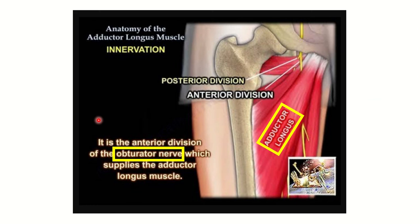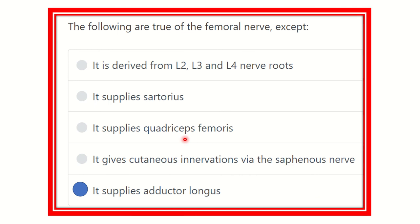Here we can see the adductor group of muscles: gracilis, adductor longus, adductor brevis, adductor magnus, and pectineus. The adductor longus is supplied by this nerve — and this nerve is the obturator nerve. So the adductor group of muscles is supplied by the obturator nerve. Therefore, the answer is that 'it supplies the adductor longus' is not true, because adductor longus is a muscle of the adductor compartment and is not supplied by the femoral nerve.